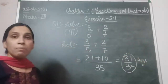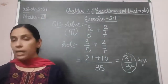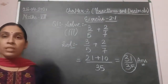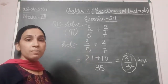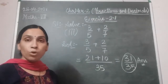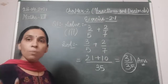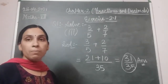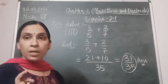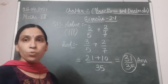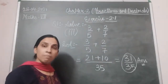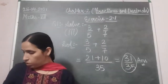Quick tip: when two denominators are both prime numbers, their LCM is simply their product — you don't need to calculate the LCM separately. Also, if one number appears in the table of the other, the larger number becomes the LCM. These quick steps save time in addition and subtraction questions.